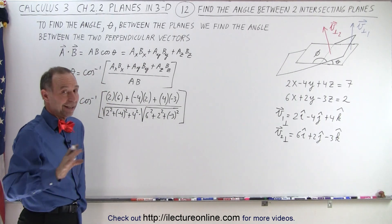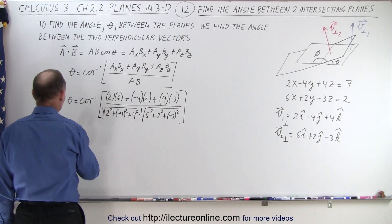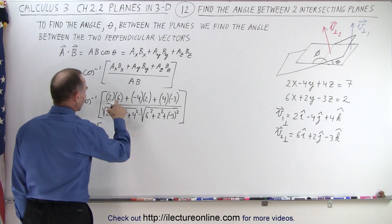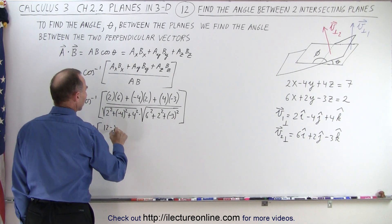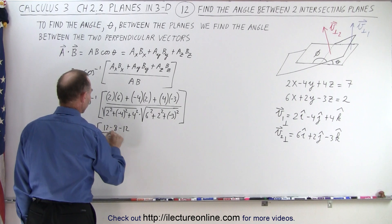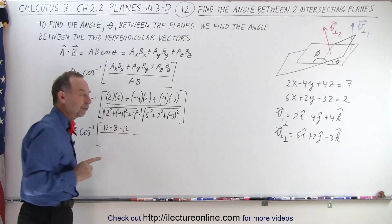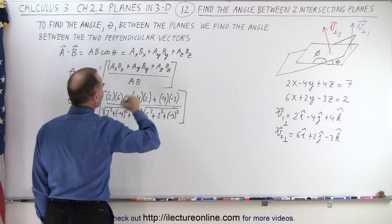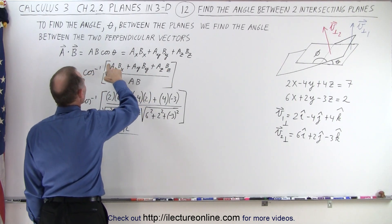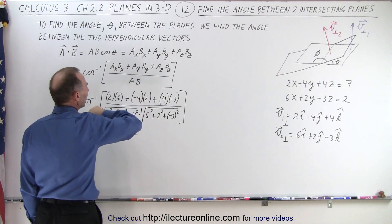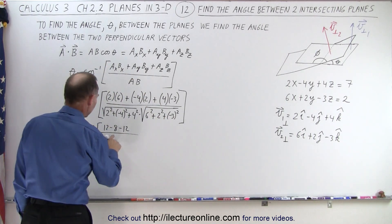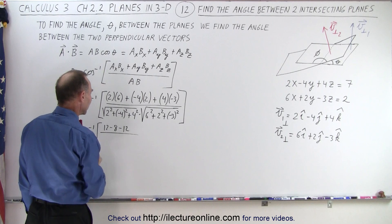All right, all we have to do is simplify that, see what we get. So theta is equal to the inverse cosine of, here we get 12 minus 8 minus 12, divided by—and of course, by the way, we should take the absolute value of that. Well, we don't need to, I think we can get by by not taking the absolute value, because we can have a negative angle so to speak. We don't have to worry about that.